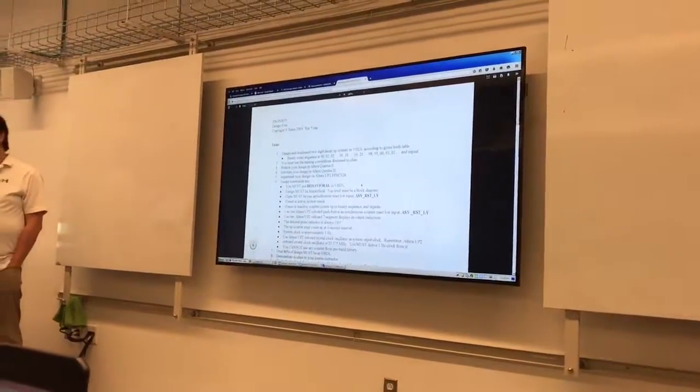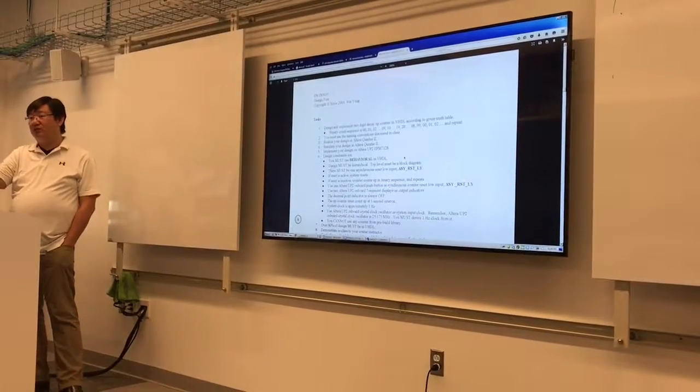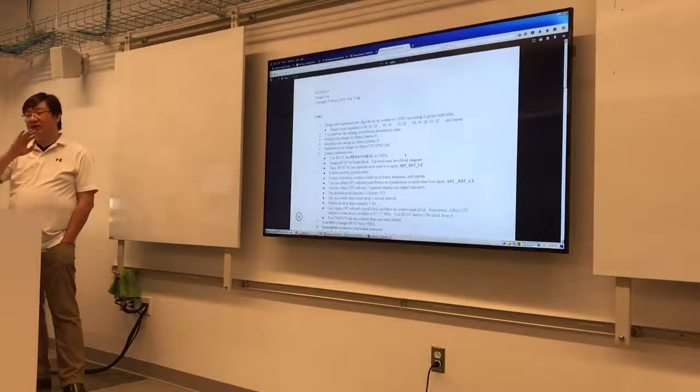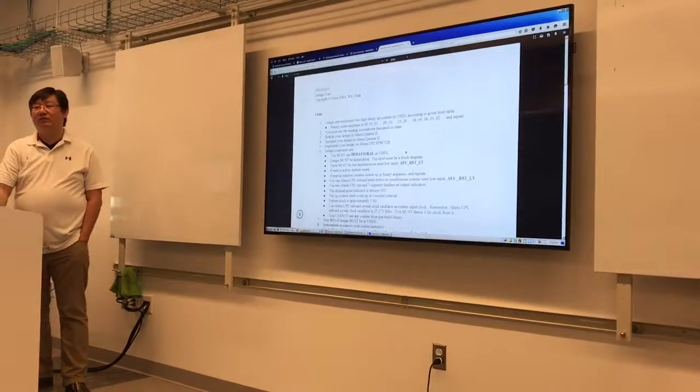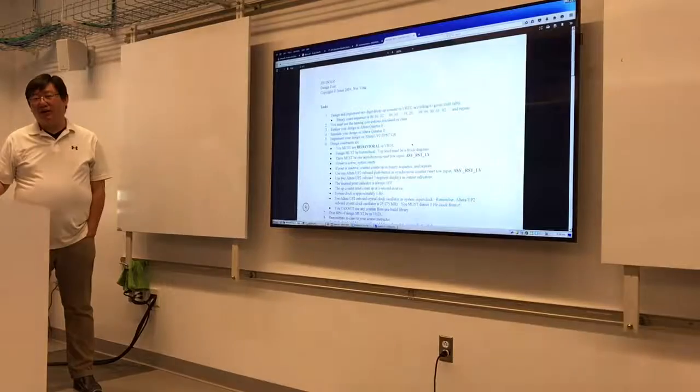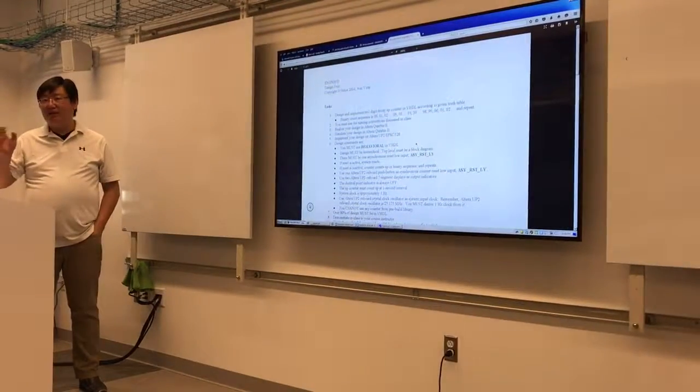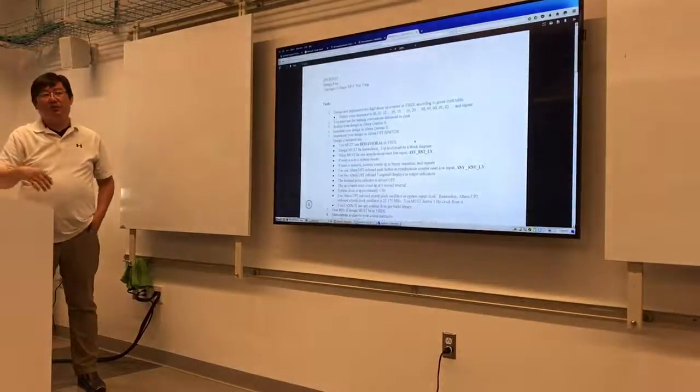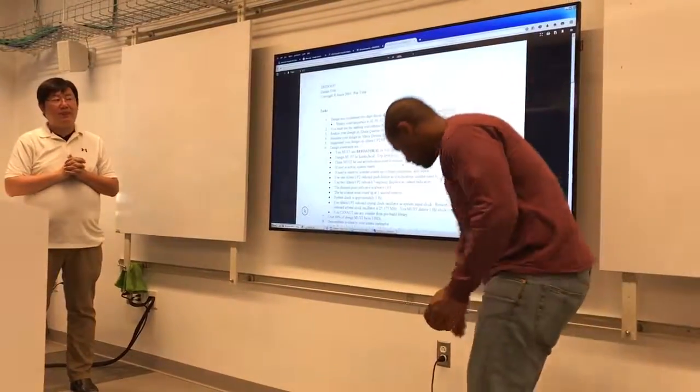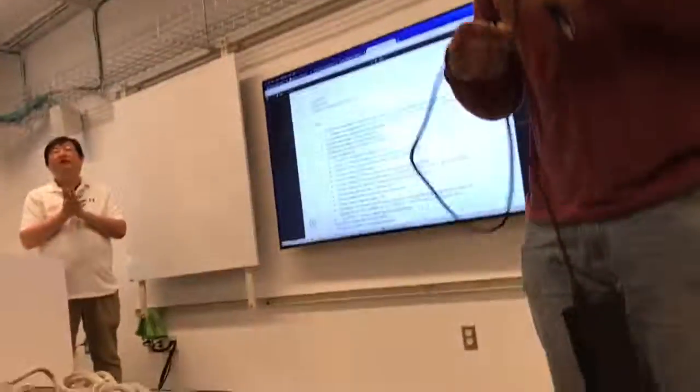So make sure that you start working on the assignment. Once you test the clock, don't touch it. Just leave it there. If the clock is working, save it. The 7-segment display, I'm pretty sure it's working. We've already done that. So make sure that you spend time with the counter, which way you can count the sequence you want. Do you have any questions? Very good.